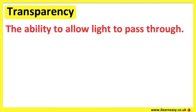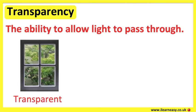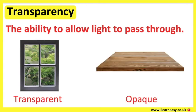Transparency is the ability to allow light to pass through. Some materials are see-through and some are not. Transparent materials are see-through because they allow all or most of the light to pass through. Opaque materials aren't see-through because they block all of the light. A window is an example of a transparent material, and wood is an example of an opaque material.